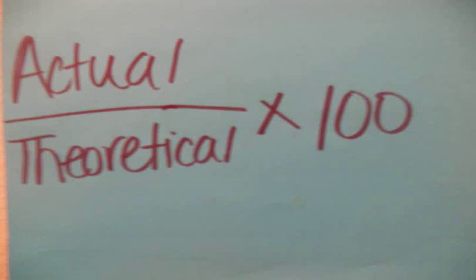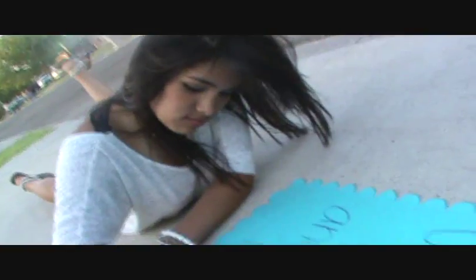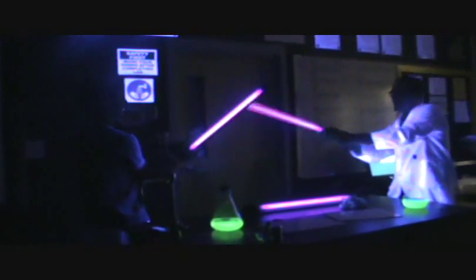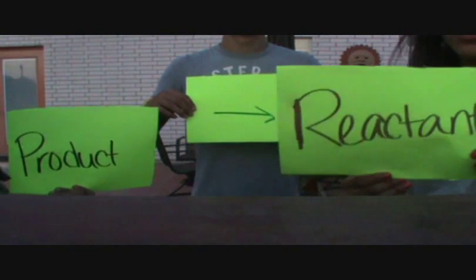I'm like: actual over theoretical, multiplied by 100. Some of them don't understand. How about converting to moles or maybe some grams? You can ask me some more but I got the whole class out. Teach me how to stoic, teach me, teach me how to stoic. Cancel all your units and balance your equation. Cancel all your units, now you're doing stoichiometry.